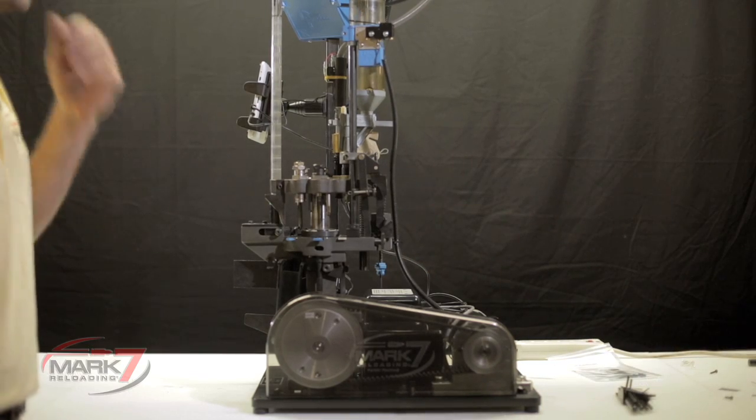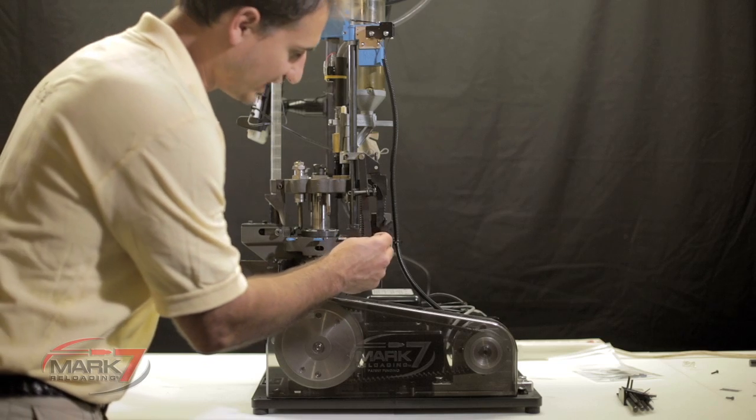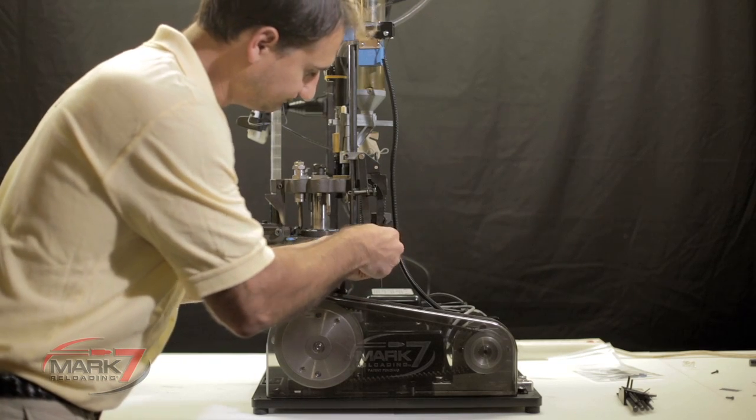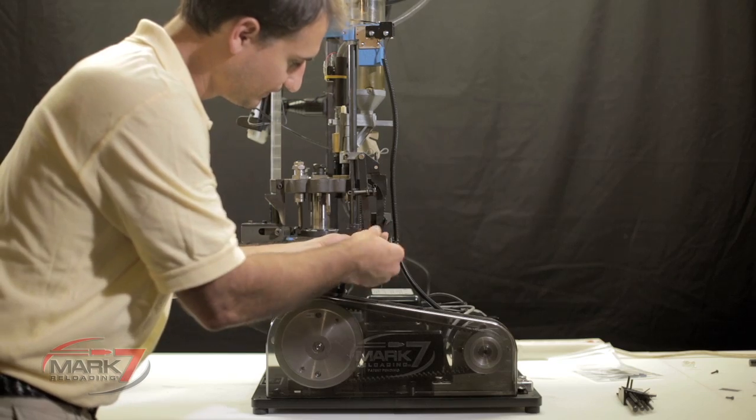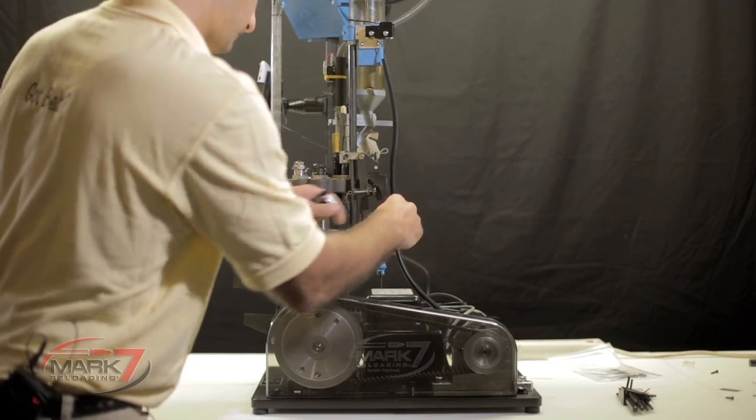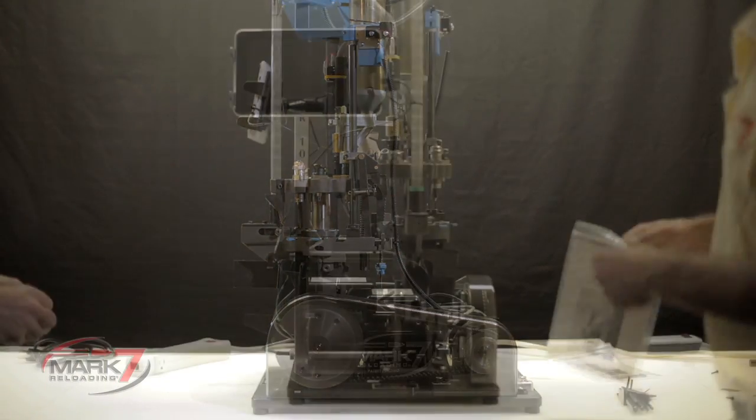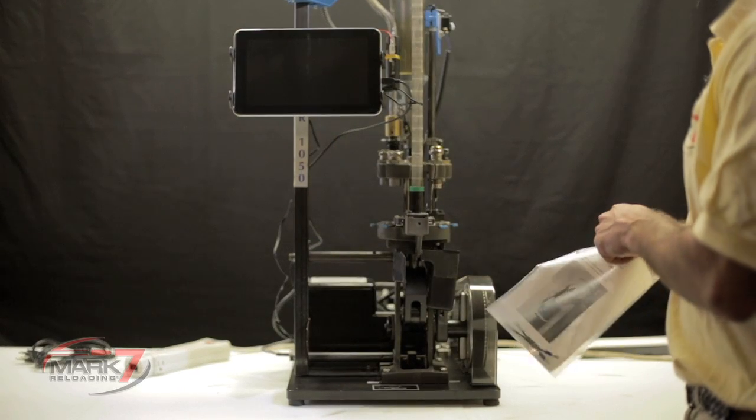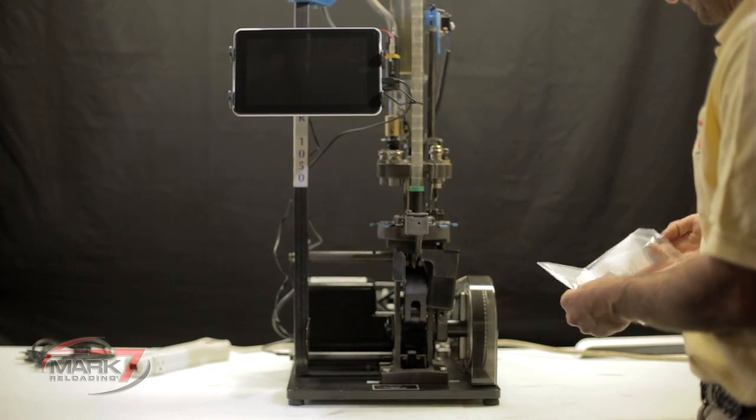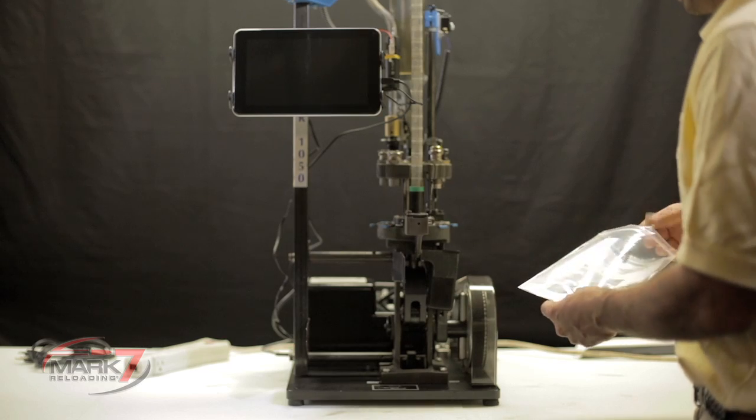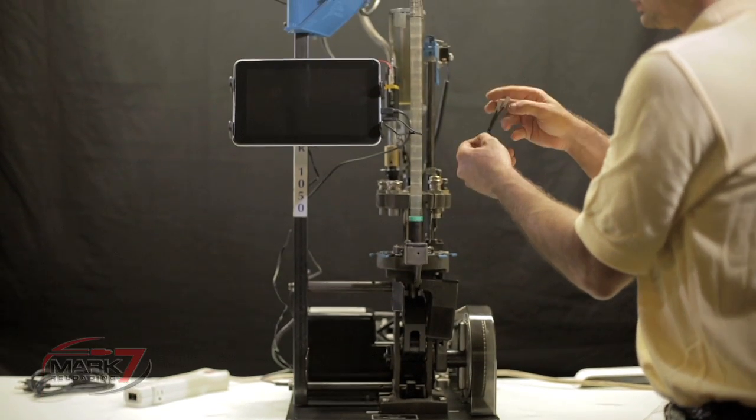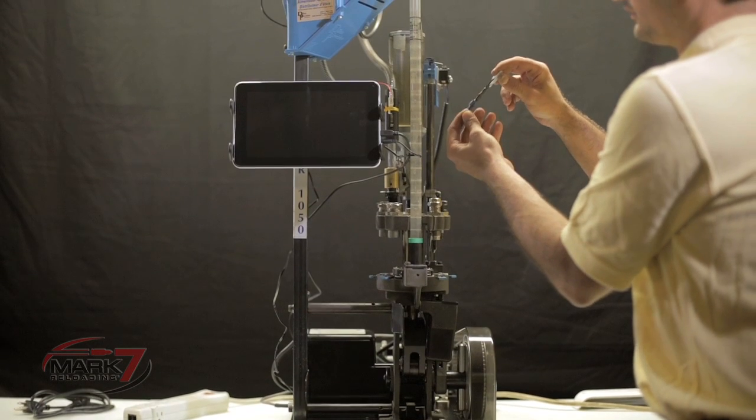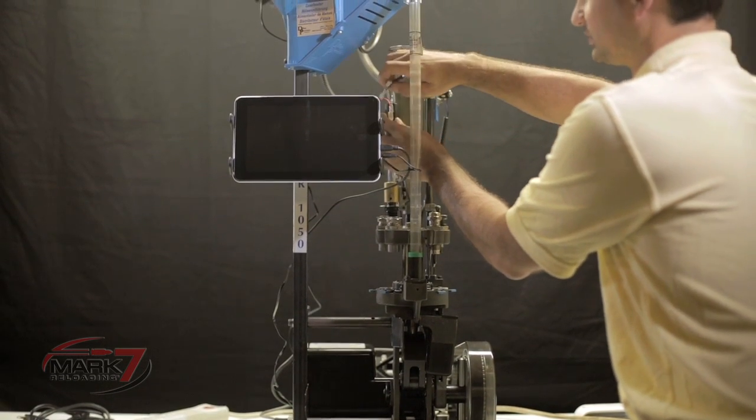Before you power on the machine, remove the ratchet assembly at the back of the Dillon 1050. If you have a Mr. Bullet feeder or a KISS bullet feeder, install our filter on top of the micro switch.